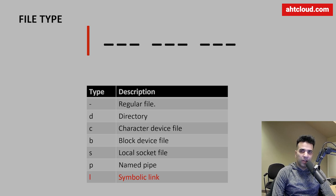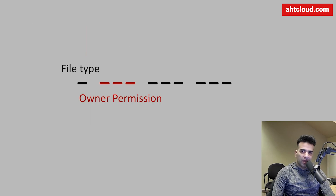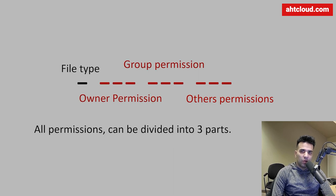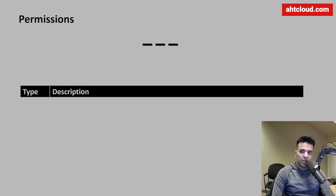The last file type option is 'l', which represents a symbolic link. The second part of the permission string is the owner permission — three characters. The third part is the group permission — also three characters. The fourth part is the others permission — also three characters.